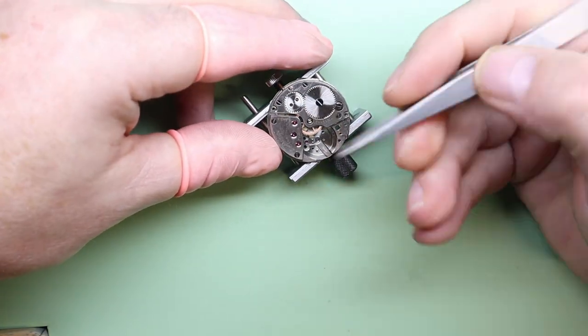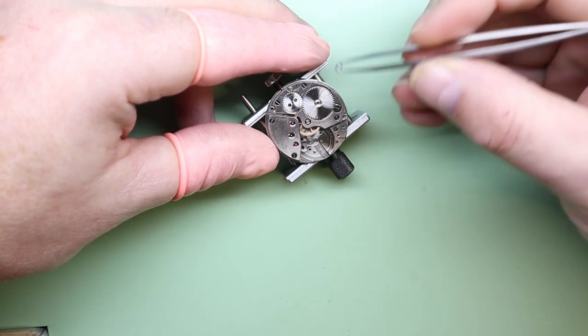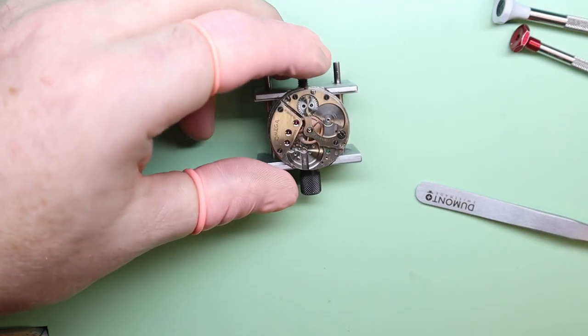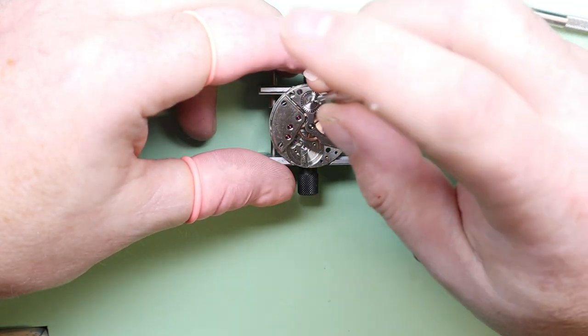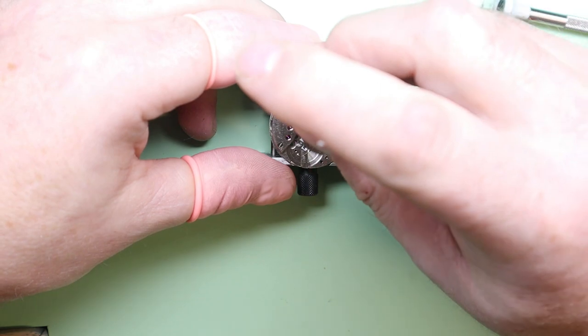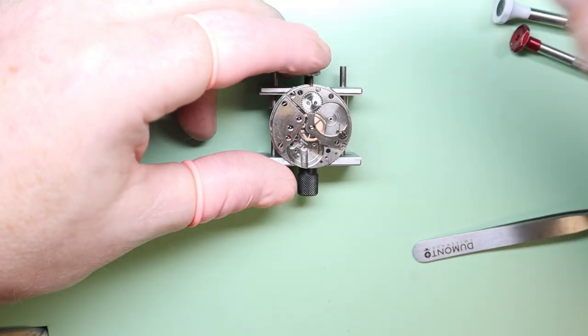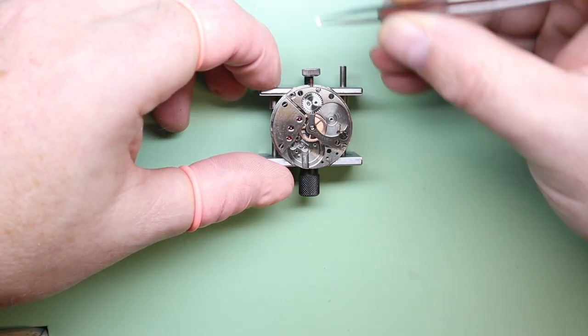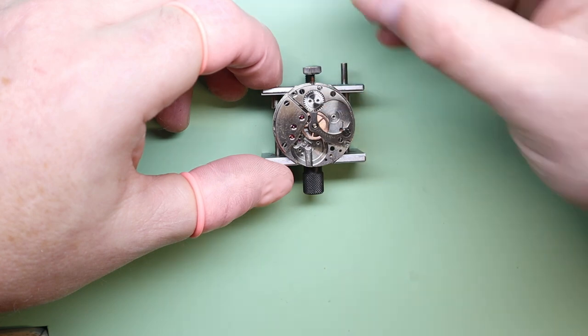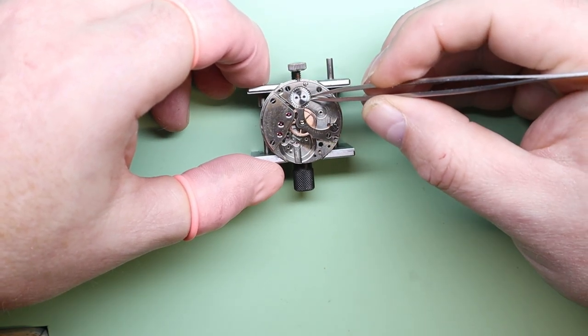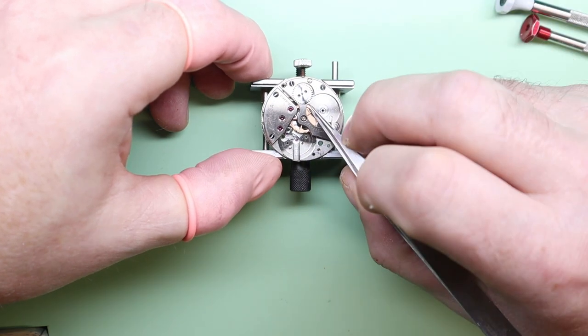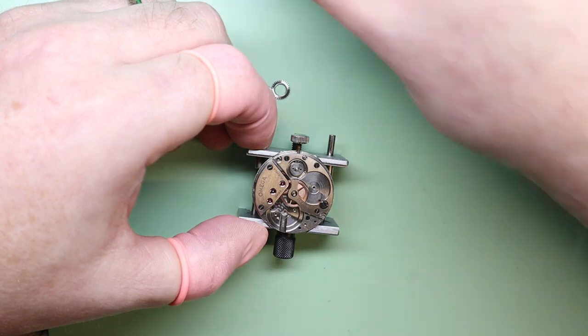We're going to remove the ratchet wheel and the crown wheel because we're going to remove the barrel bridge first. Now onto the crown wheel with two small screws securing that crown cap in place. Now we can remove the crown wheel and the crown wheel core. Getting a little bit stuck there with some old oils. We'll lift that up, separate them, then they go into the cleaning basket.